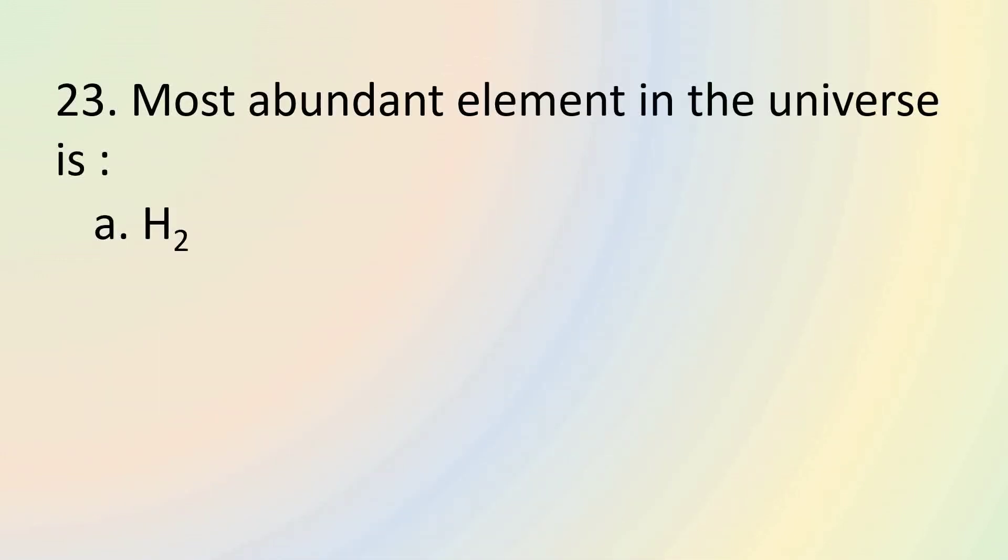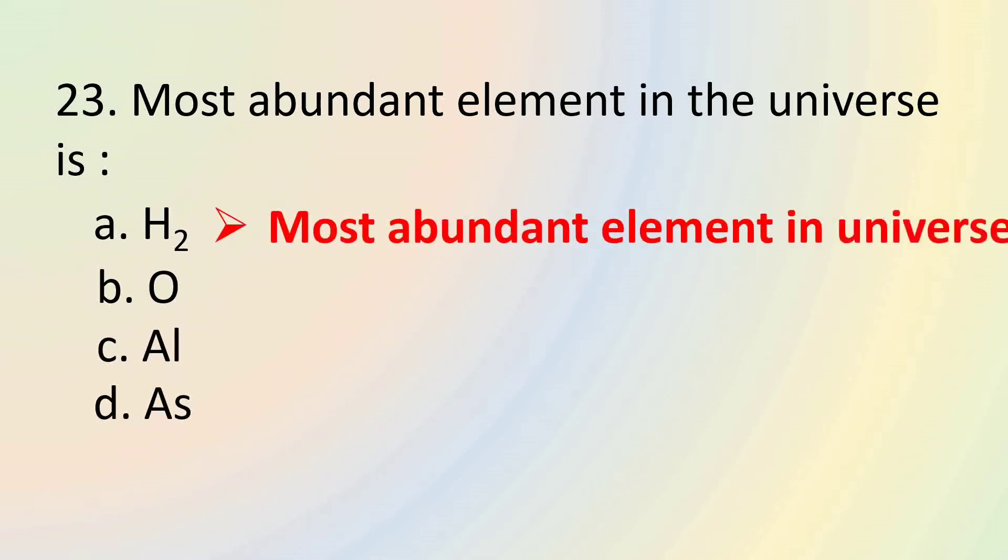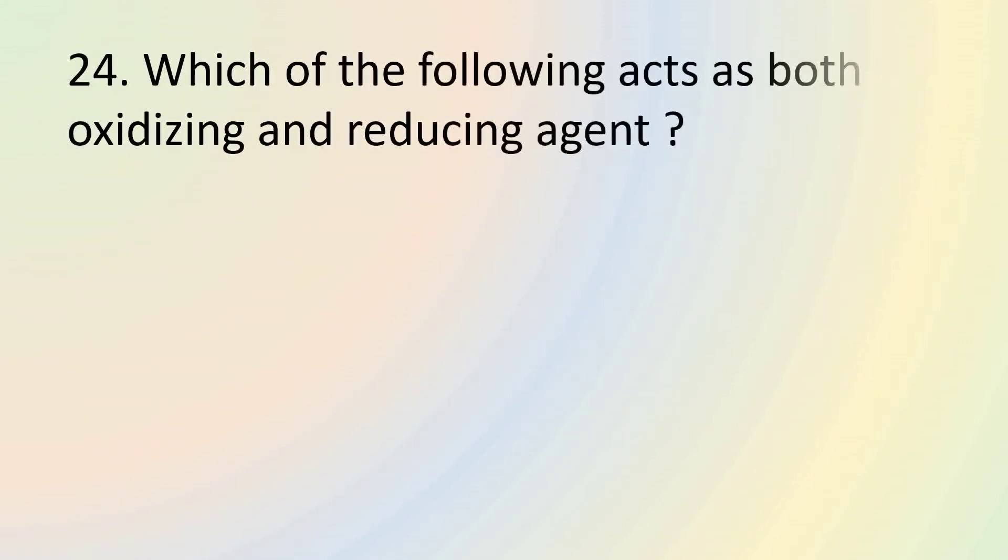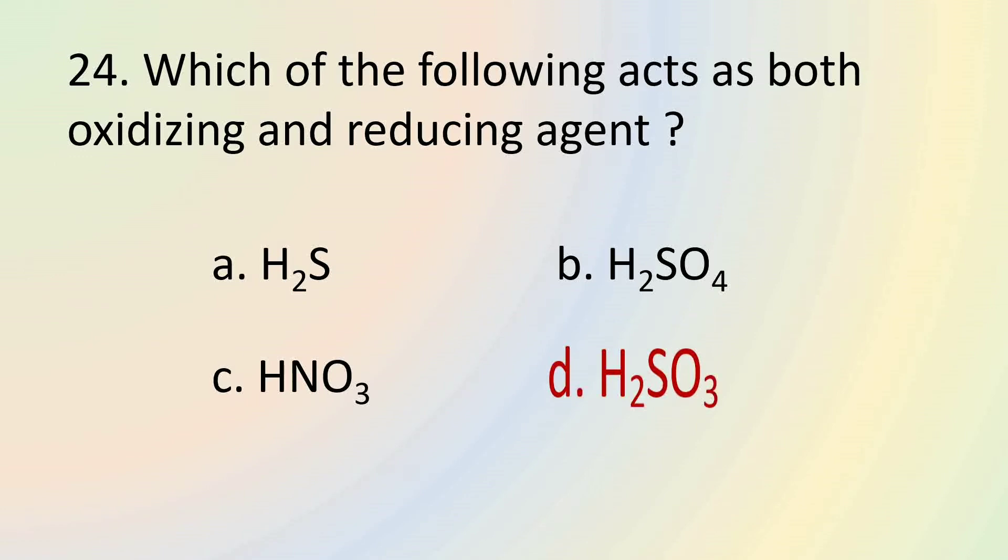The most abundant element in the universe is hydrogen. Hydrogen comprises more than 90% of the sun's mass. Oxygen is the most abundant element on Earth. Aluminum is the most abundant metal. Astatine is the rarest element on Earth's crust. Question 24 asks us to identify a species that can act as both oxidizing and reducing agent. H2S is a reducing agent. H2SO4 and HNO3 are oxidizing agents. So the correct answer here is H2SO3.